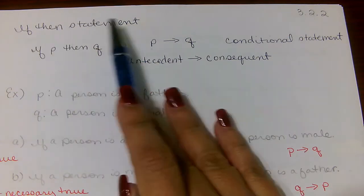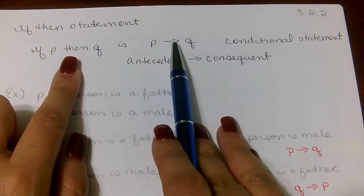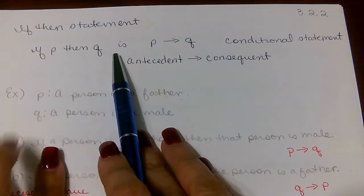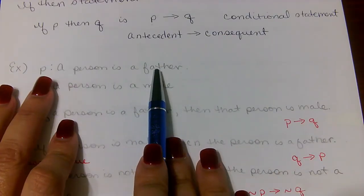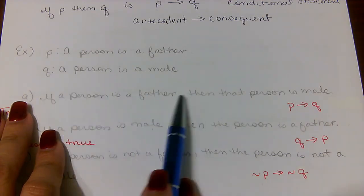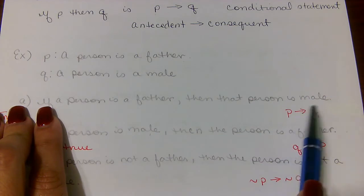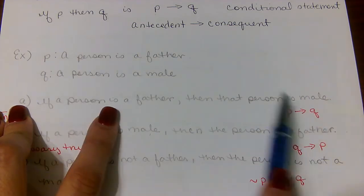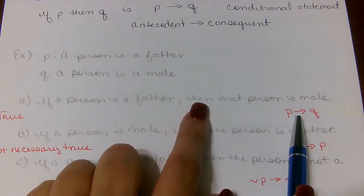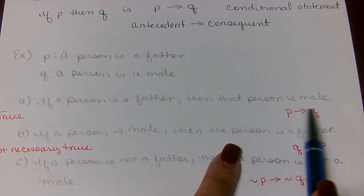Here we have an if-then statement. Any time you have the words 'if-then,' we are going to use an arrow. This is a conditional statement — if this happens, then this will happen. For example, let P be 'a person is a father' and Q be 'a person is a male.' For part A: if a person is a father, then that person is male. That gives us P → Q, read as if P, then Q. This is a true statement.